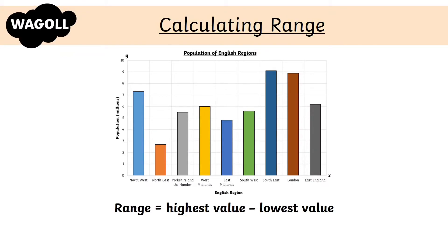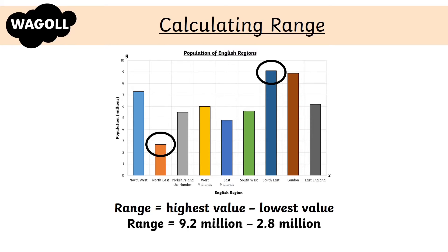For instance, this bar graph shows the population of English regions. To find the range, we find the highest bar — the Southeast with a population of 9.2 million on the y-axis — and the lowest bar, which is the Northeast with 2.8 million. We then subtract the lowest value from the highest value: 9.2 million minus 2.8 million gives us a range of 6.4 million.